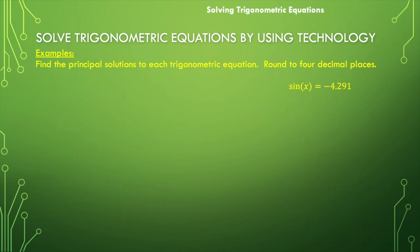Next example, we have sine of x is equal to negative 4.291.